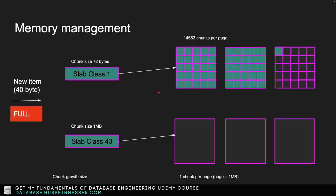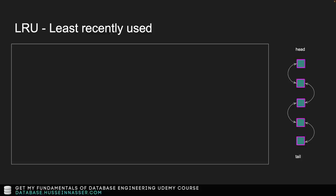Once you understand how memory allocation works, you can architect your application to choose the perfect item sizes to fit efficiently. Your backend can be tuned specifically to work well with Memcached's slab class structure — you're not choosing haphazardly. That's how you know your craft effectively.